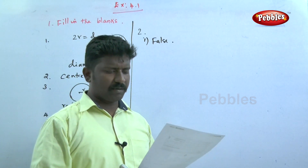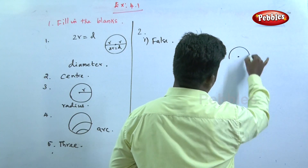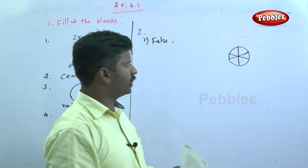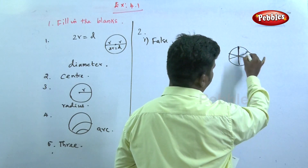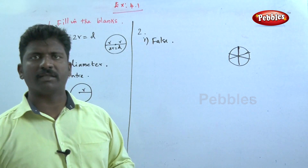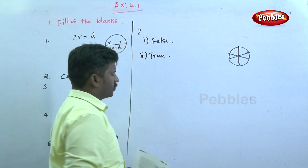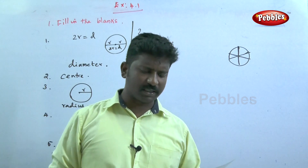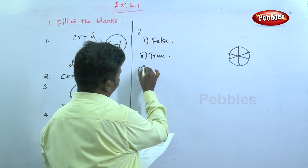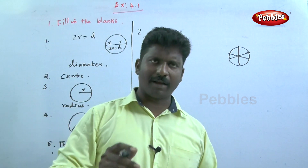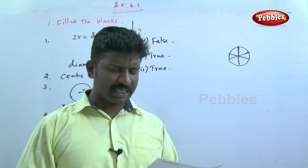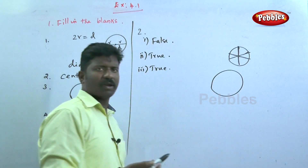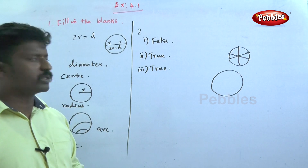The second point: the point of concurrency of the diameters is the center of the circle. Concurrent lines are lines lying on the same point. Every diameter of the circle passes through the center, so the second statement is true. The third one: the boundary of the circle is called the circumference — this is true. The fourth one: a circle has an infinite number of equal chords — this is true, because the number of equal chords is uncountable.